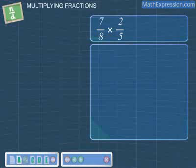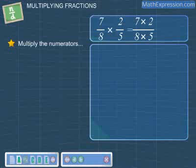Alright, let's take a look at more examples on multiplying fractions. Let's multiply 7 over 8 with 2 over 5. First, multiply the numerators. So, we multiply 7 with 2. This gives 14.